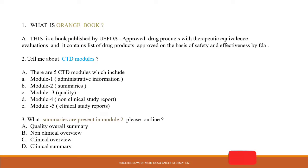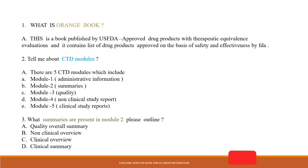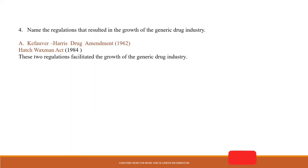The next question: What summaries are present in Module 2? When asked this, outline the following: Quality Overall Summary, Clinical Summary, Non-Clinical Overview, and Clinical Overview. These are the items present in Module 2. For a quick answer, mentioning Quality Overall Summary and Clinical Summary is sufficient.